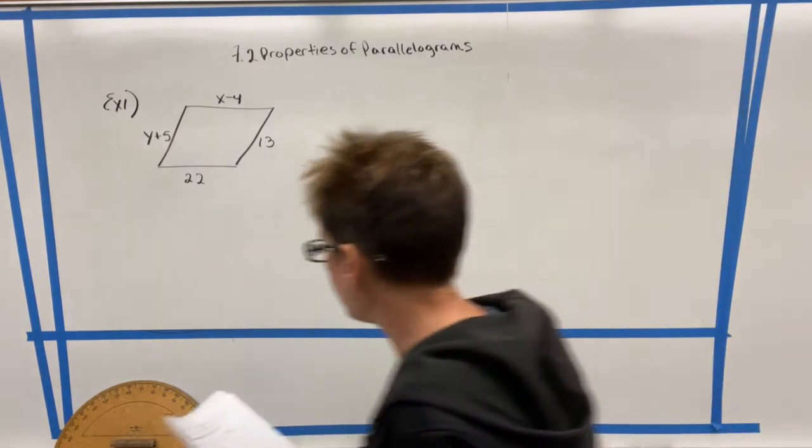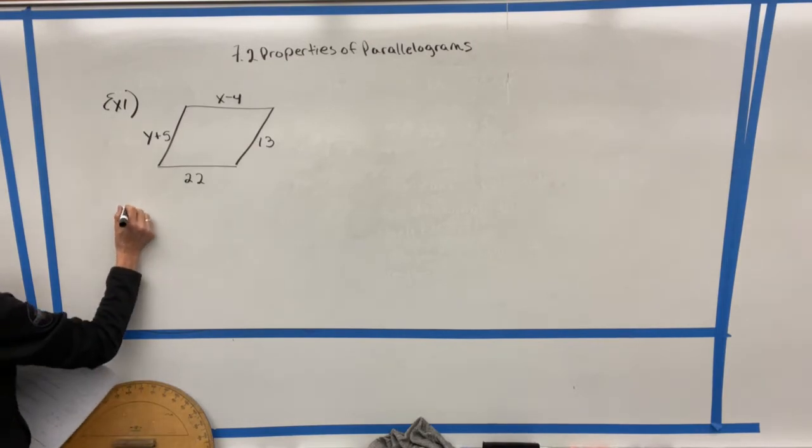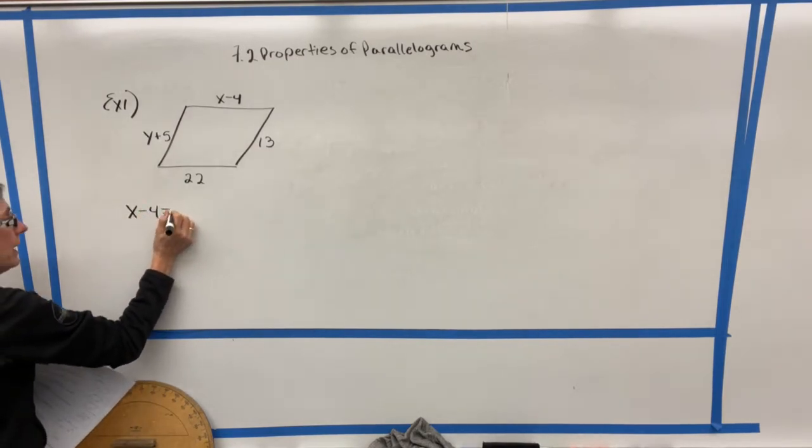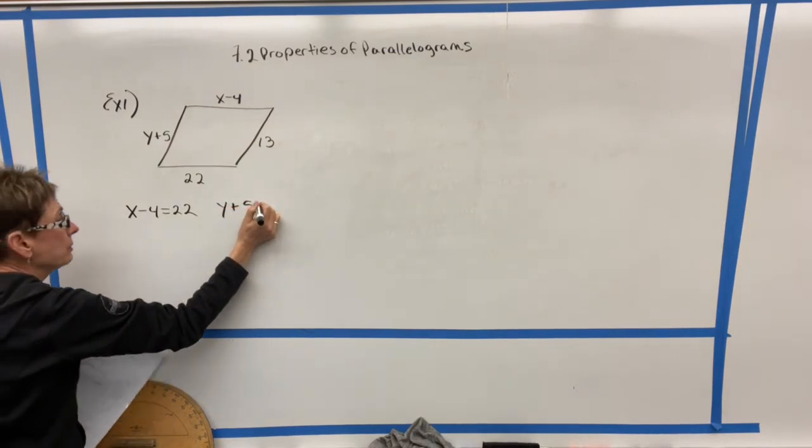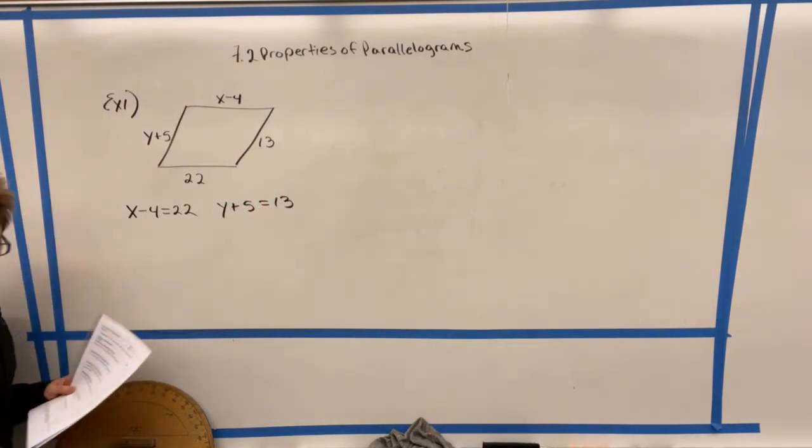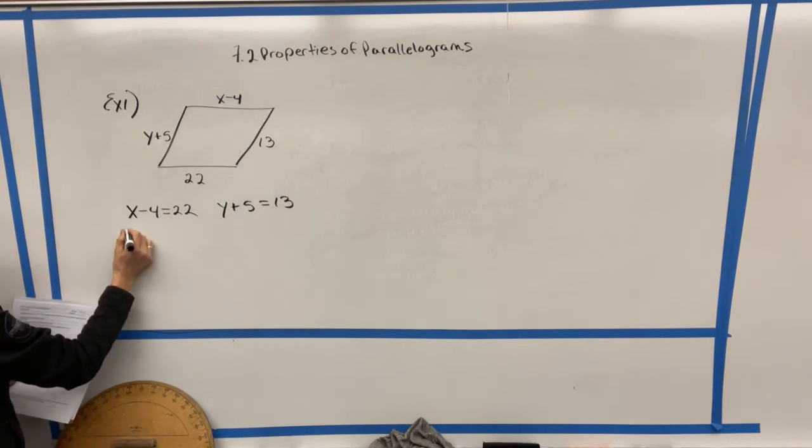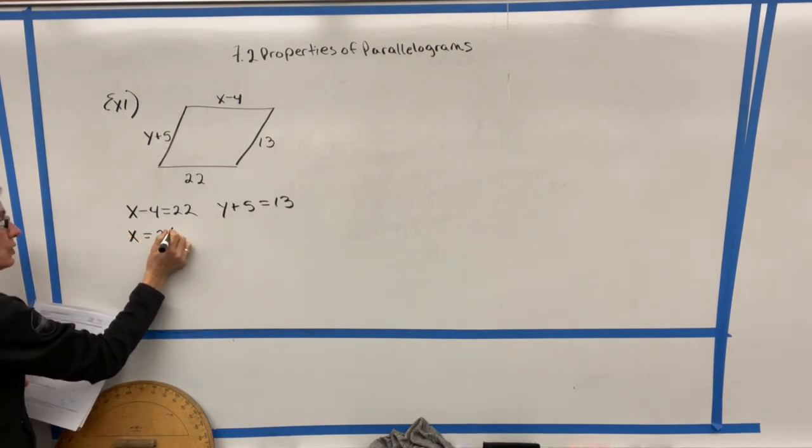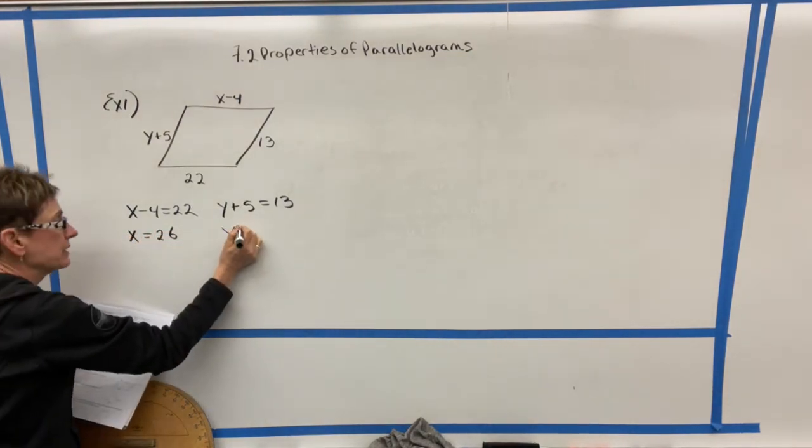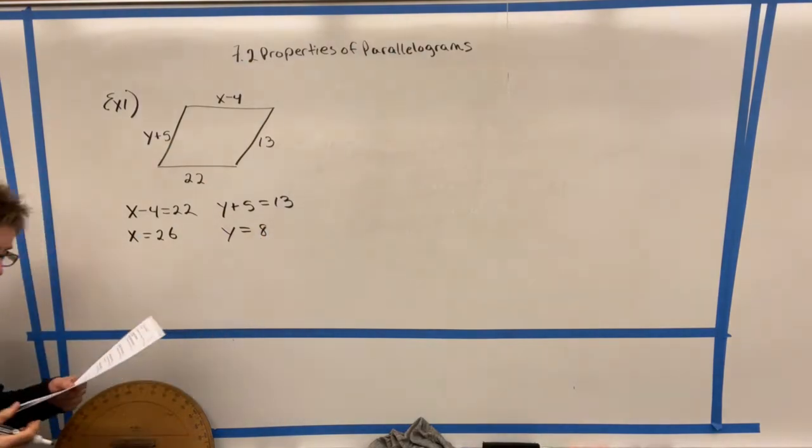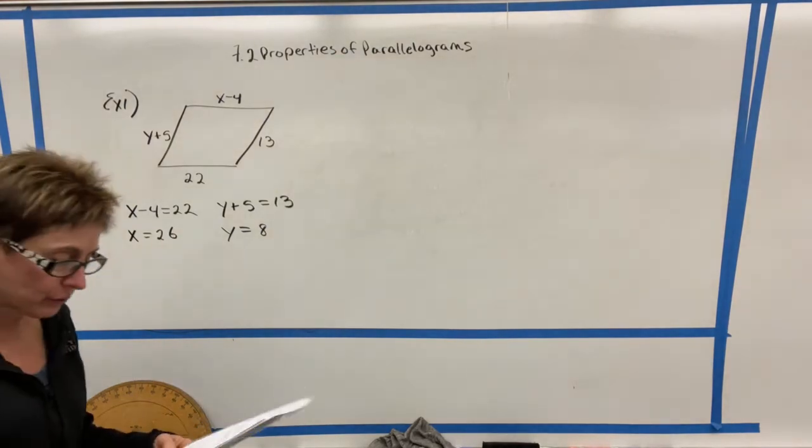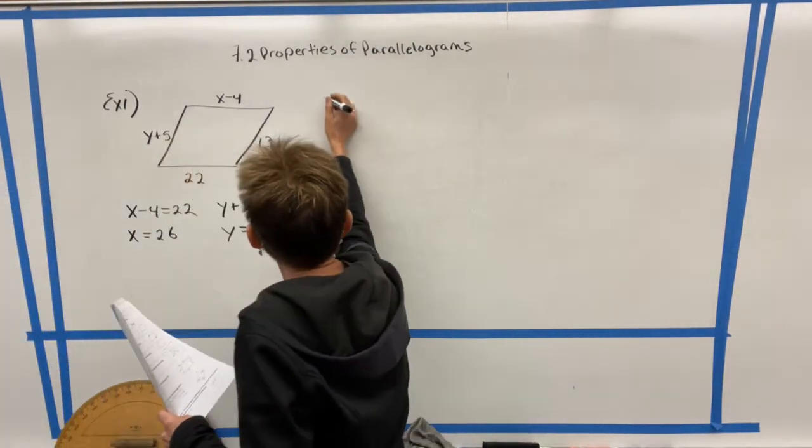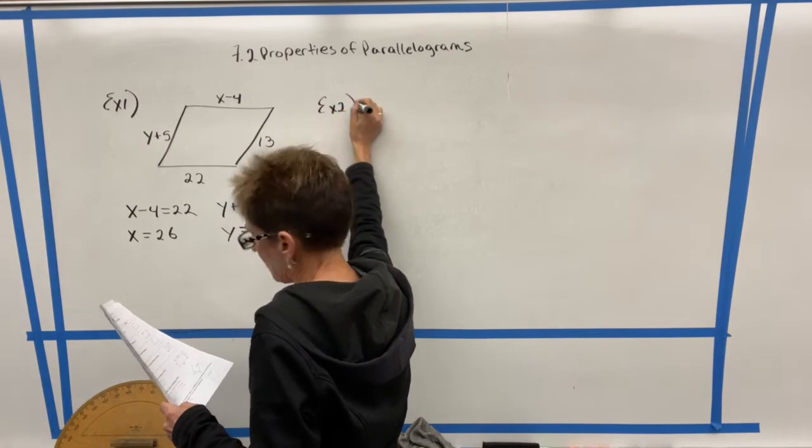Well, we know that the opposite sides are congruent. So I know that X minus 4 has to equal 22, and also that Y plus 5 has to equal 13. Then I would just add 4 to get X is 26, and I would subtract 5 to get that Y is 8. So that uses the feature that both pairs of opposite sides are congruent. Alright, let's go ahead and look at another example.